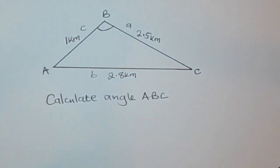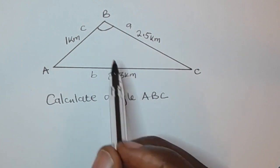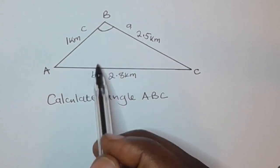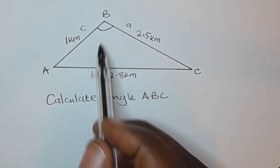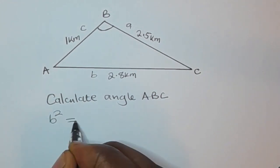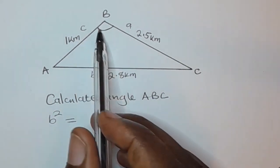Next, to come up with the cosine rule that is going to calculate this angle, first of all you are going to say the side that is opposite to the angle which is b, so we're going to say b squared is equal to, then we are going to use these two sides that are forming the angle that we are being asked to find.